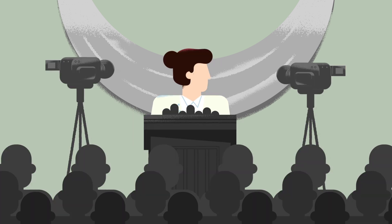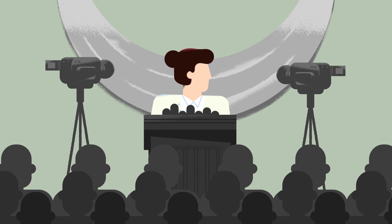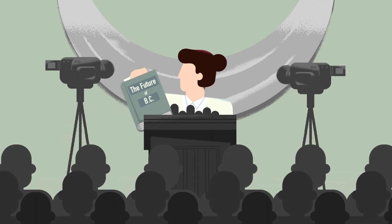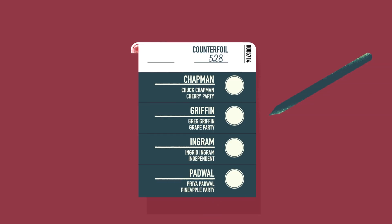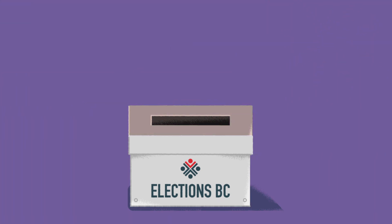During campaigns, parties and candidates share their policies and ideas, called their platform, and work towards gaining public support. Voters choose their candidate by marking their ballot. At the end of the campaign, the votes are counted, and the winning candidates are officially elected.